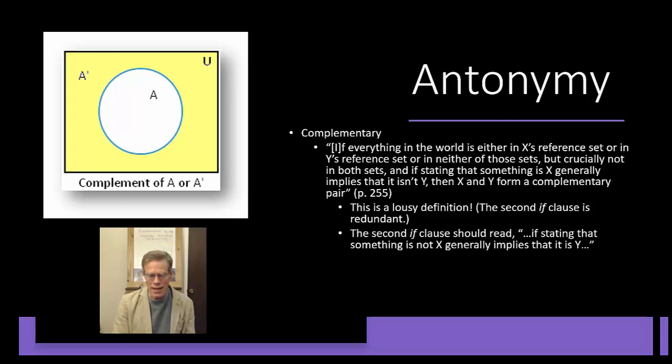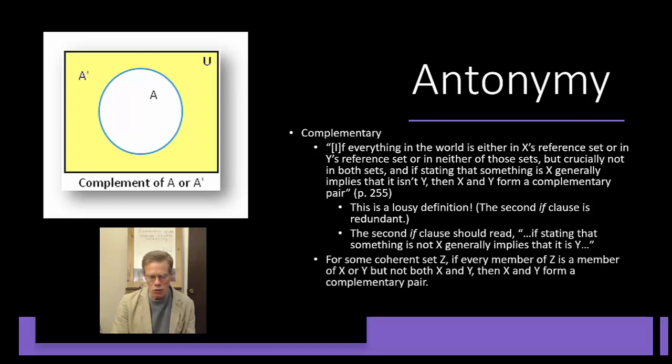So, and furthermore, the second if clause, I think that what they intended to say was if stating that something is not X generally implies that it is Y. Now, I'm going to give a simplified version of this definition. Hopefully, this will be a little bit clearer to you. For some coherent set Z, if every member of Z is a member of X or Y, but not both X and Y, then X and Y forms a complementary pair.